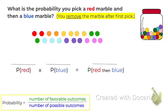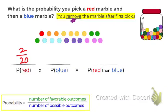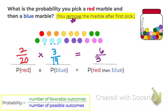Now let's try another. This one is the same exact question, except now it says we remove the marble after our first pick. So again, the probability of picking a red: there are 20 marbles and 2 of them are red. But let's say we did pick that red marble and then we set it aside — we didn't put it back in the jar. So when we're calculating the probability of picking a blue one now, the total number of marbles in our jar is only 19. And how many of those are favorable? Three. So now that we have the probability of both events, we multiply them together and we get 6 out of 380.